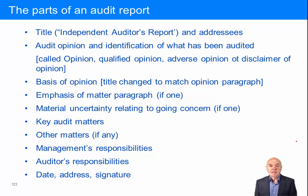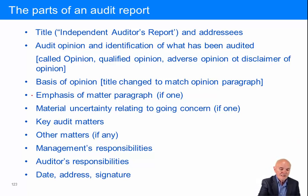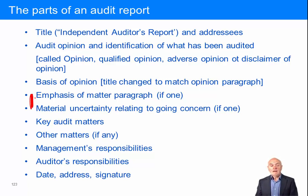If there is a material uncertainty regarding going concern, this is where it will be addressed. Going concern is the assumption that the business will continue in the foreseeable future. If there is an uncertainty regarding this, it should be disclosed in the notes to the financial statements. Think of material uncertainty relating to going concern as a specialist emphasis of matter — saying we think there's a real danger this company is not going to last. Neither of these in any way modifies the audit opinion; they are simply a warning to go and look at the relevant note.